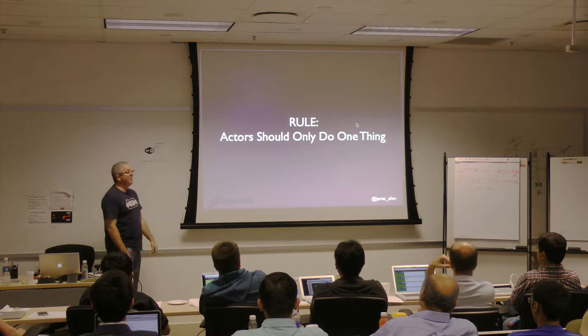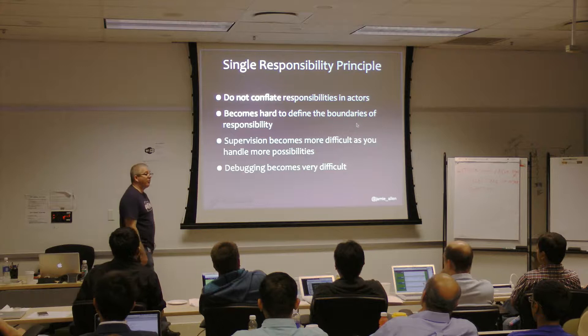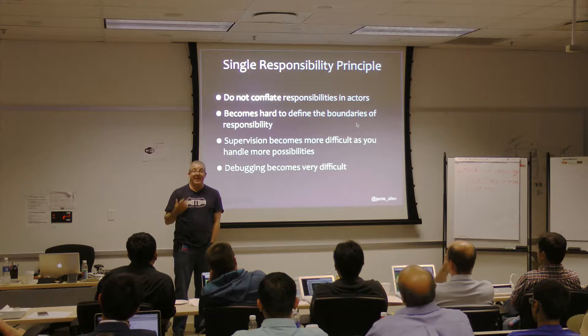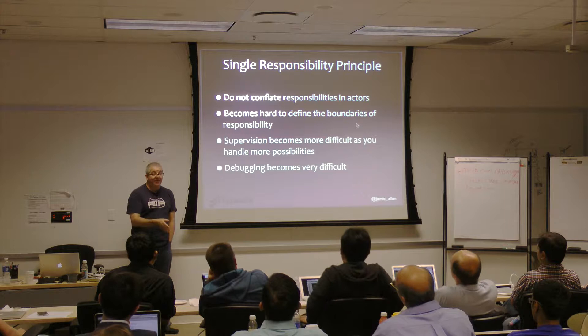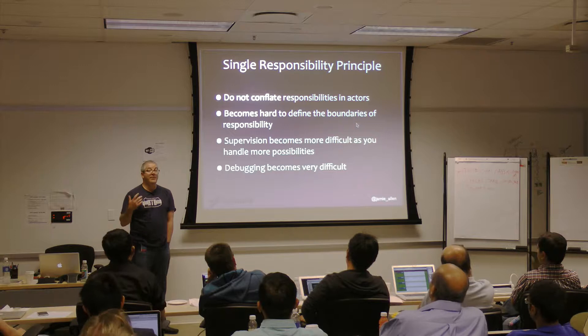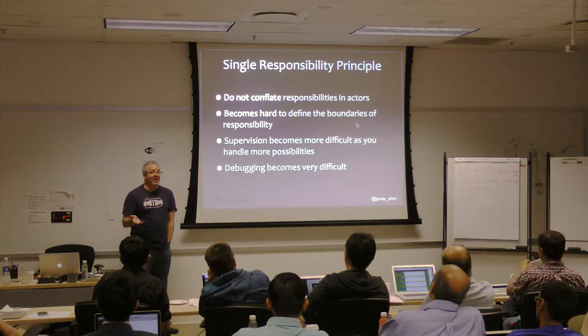Actors should only do one thing. It's a bad idea to conflate the responsibilities of actors — we want them to be atomic in nature, handling just one specific type of work or data. That way actors don't handle too many different kinds of messages, making it harder to figure out what happens when things go wrong. Supervision becomes more difficult the more things an actor does. Follow Uncle Bob's single responsibility rule. Actors are lightweight — about 400 bytes before you put anything in them.